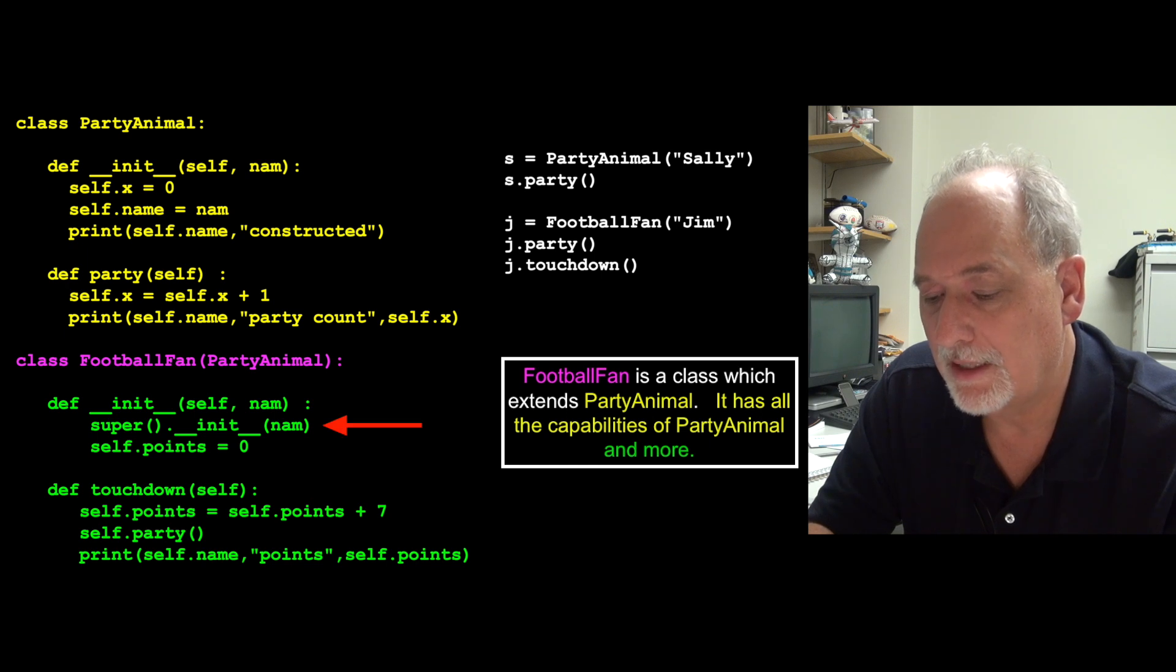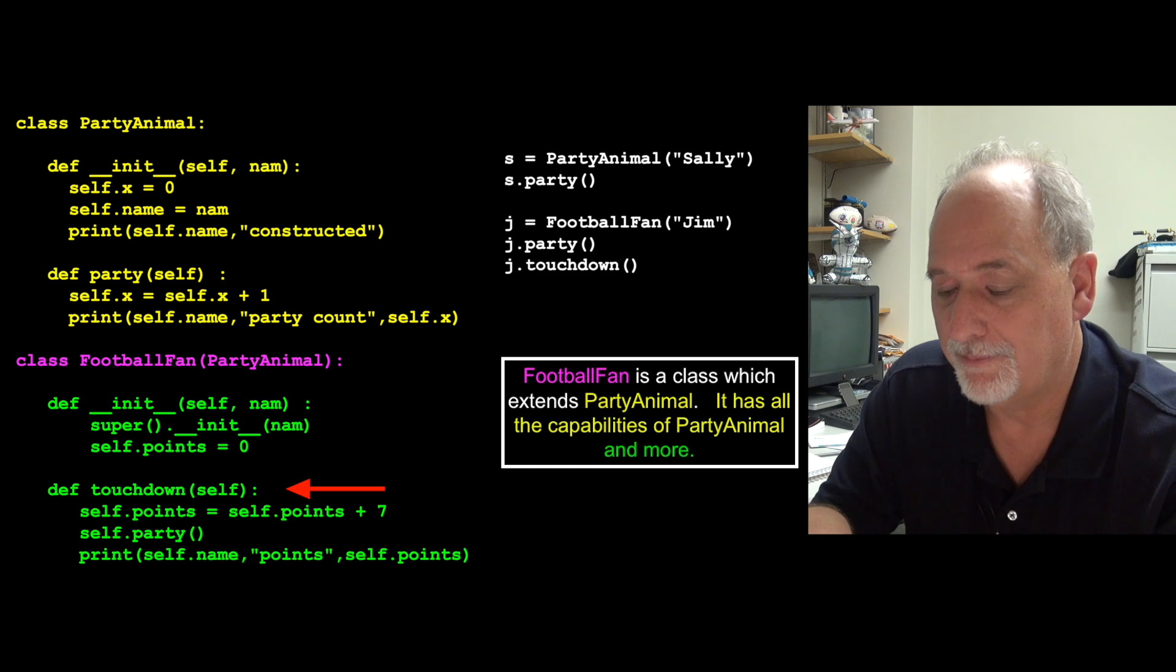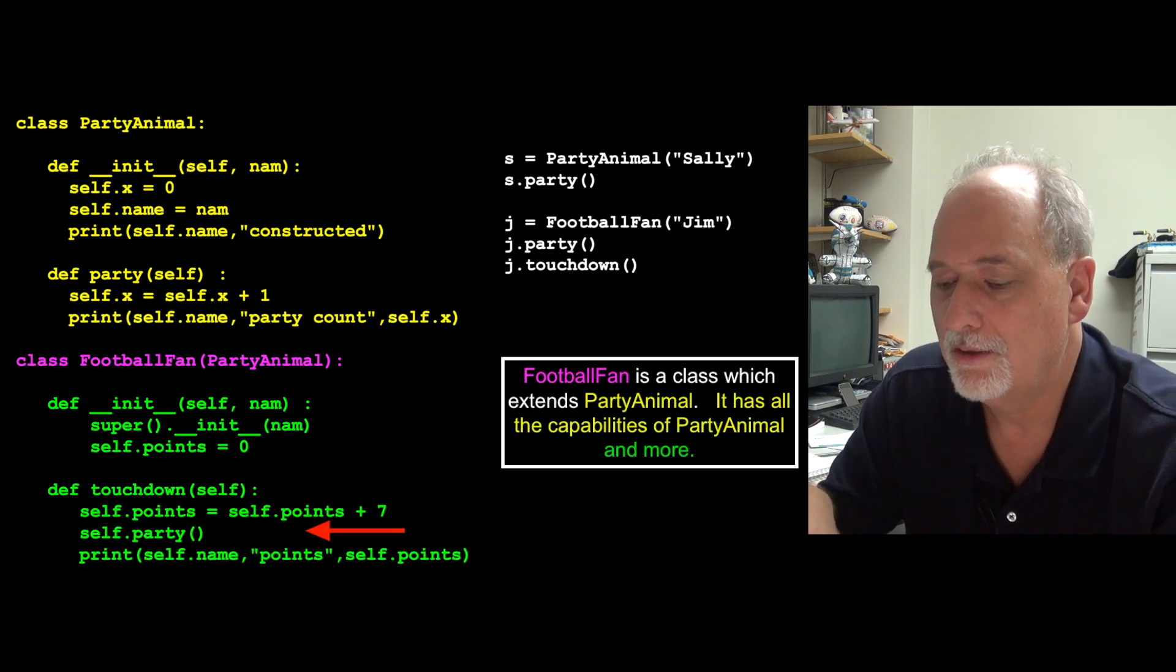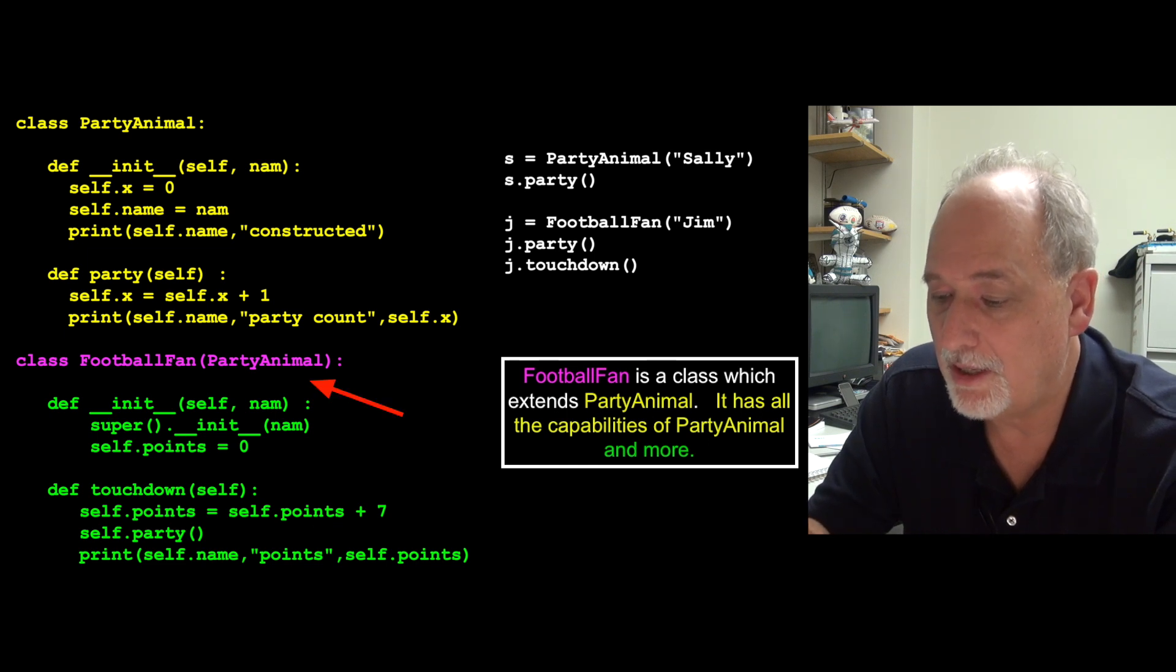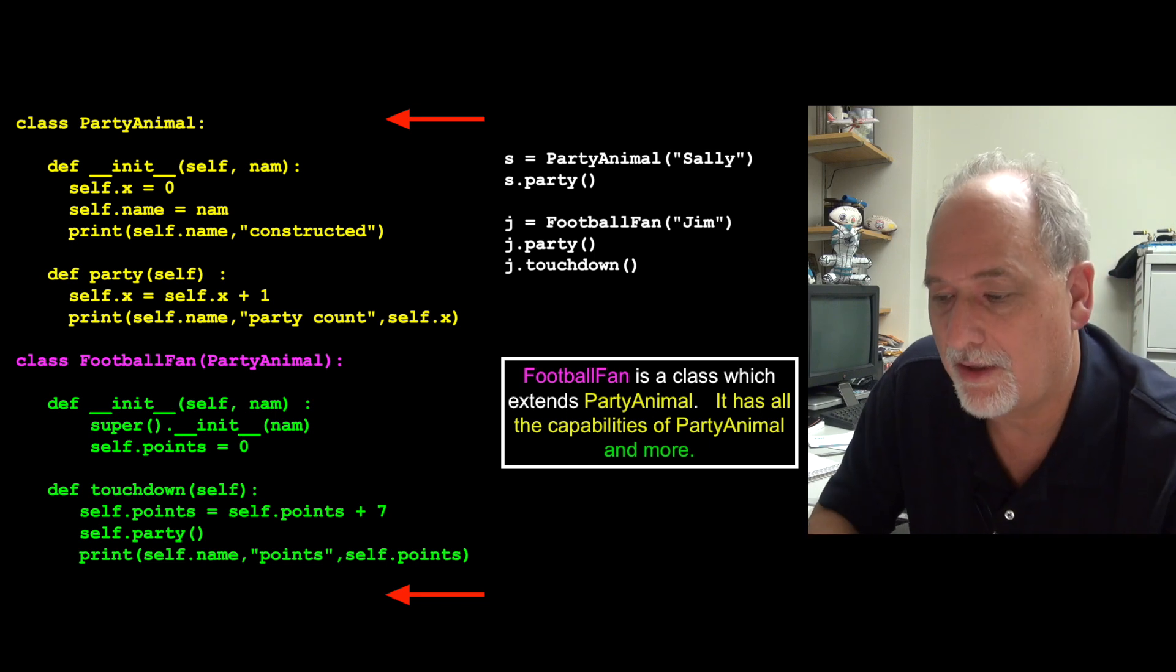Meaning the x, the name, the init, the party, all those methods and data are sitting there. And now we're going to add a new variable. So FootballFan has, in addition to all those other variables, it has points, and it has a touchdown method. And we add seven of the points, and then we call the party. And that does that. So this is calling this method, because FootballFan includes x, name, and party, and init, and everything. So this FootballFan is really an amalgamation of all these things together.